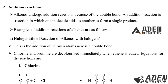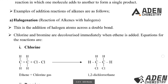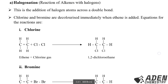Halogenation is a reaction of alkenes with the halogens — it is the addition of halogen atoms across a double bond. The halogens include chlorine, bromine, iodine, and fluorine. Chlorine and bromine are decolorized immediately when ethene is added.